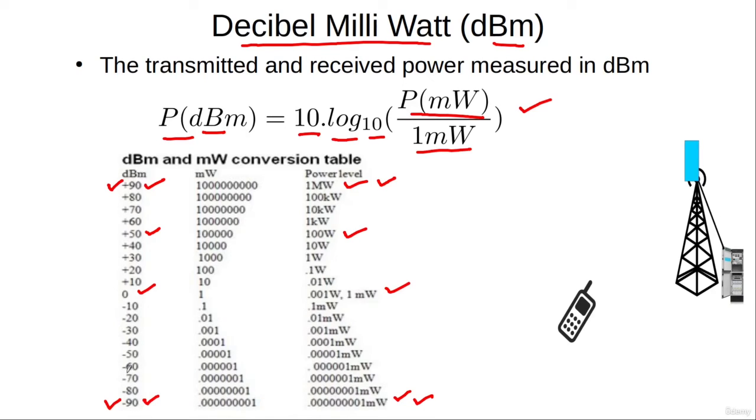In terms of numbers, this variation from 90 dBm to minus 90 dBm is much more manageable compared to these quantities in watts. Now suppose a mobile station is transmitting power at 1 watt and the power received at the base station is 1 milliwatt. We can see there is a 1000 times difference between the transmitted and received power.